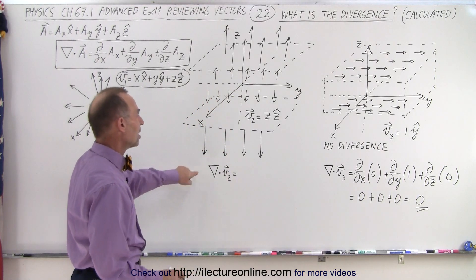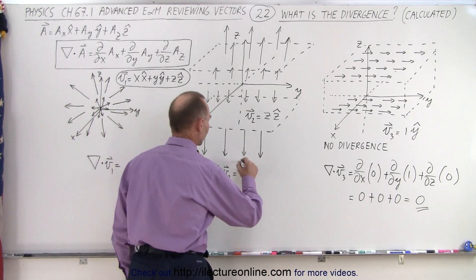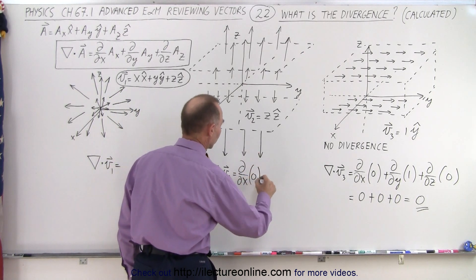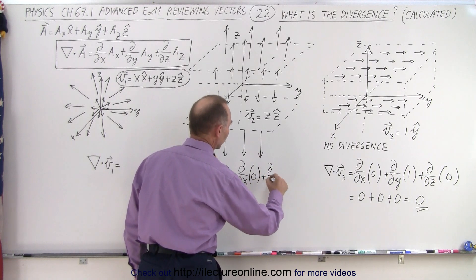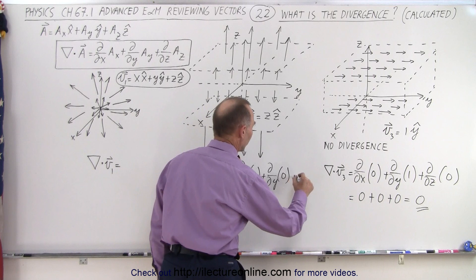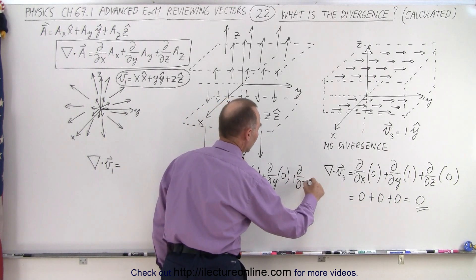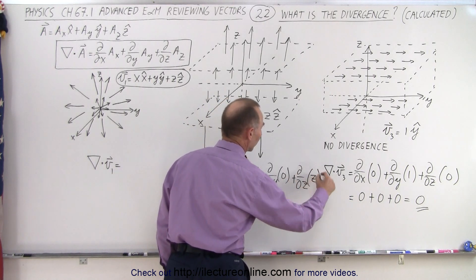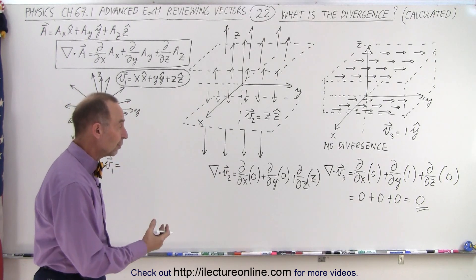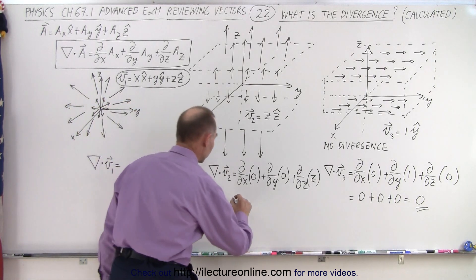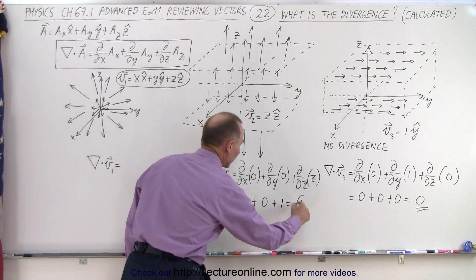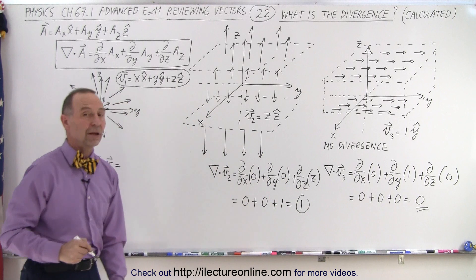For the second function, the partial derivative with respect to x of the x component is 0 since there's no x component, plus the partial derivative with respect to y of the y component is 0 since there's no y component, plus the partial derivative with respect to z of the z component — and there is a z component, it is z. The partial derivative of z with respect to z is simply 1, so this becomes 0 plus 0 plus 1, meaning there is some divergence.